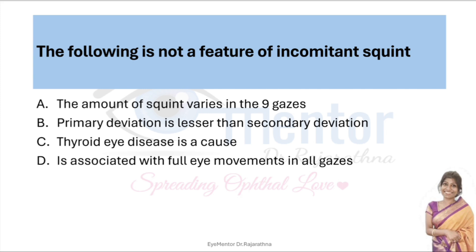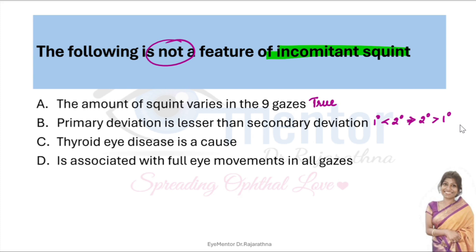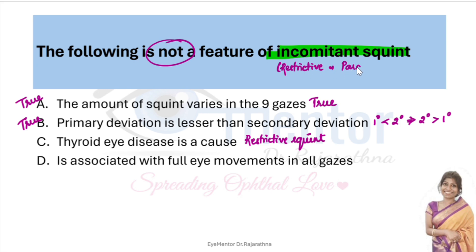The following is not a feature of incomitant squint. Incomitant squint means the amount of squint varies in the nine gazes — option A is the definition, so it is true. Primary deviation is lesser than secondary deviation — true. Thyroid disease causes restrictive squint, and restrictive and paralytic squints cause incomitant squint — again true.